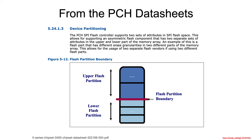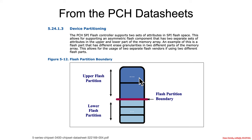This is a visualization from the 5 series PCH. It shows there can be an upper flash partition and a lower flash partition with some boundary — there might be different erase granularities, so maybe an erase up here erases 4K and down here it erases 64K, depending on the particulars of the SPI flash chips. A single SPI flash chip could support reconfiguration if you want bulk erases in one region and smaller erases in another, or even one byte at a time.